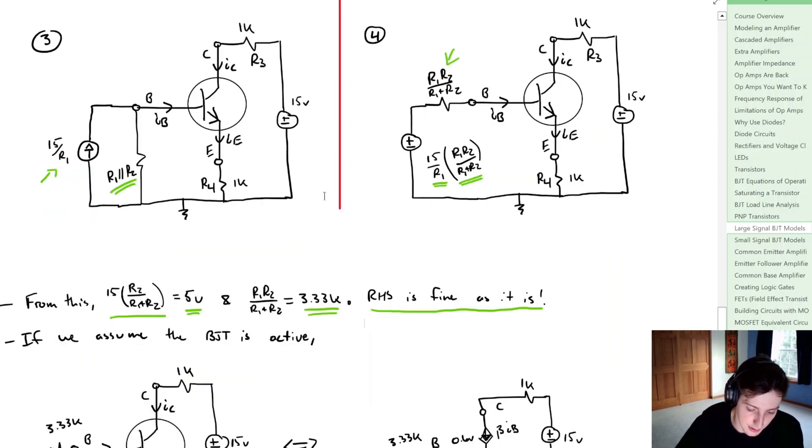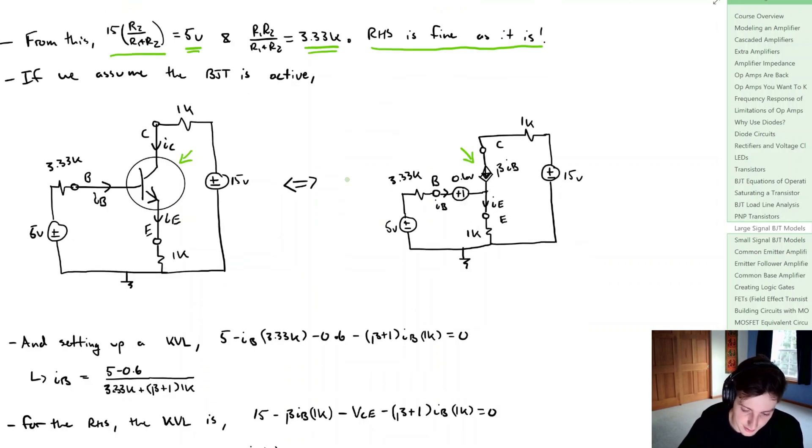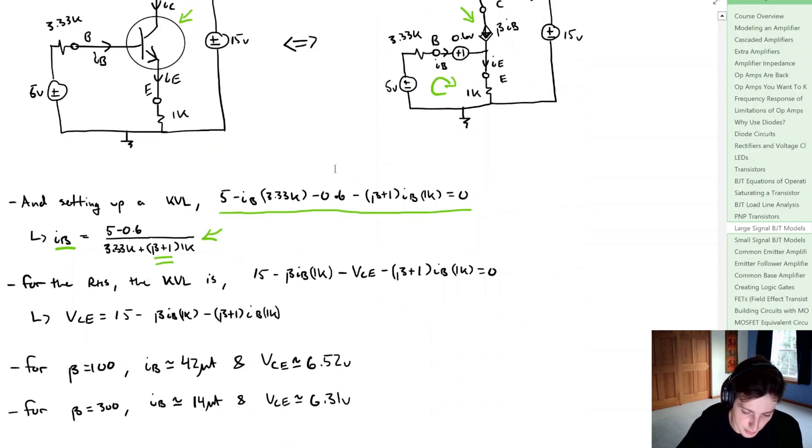Now what we can do is assume that the BJT is active. We're going to take our NPN transistor, assume that it's active, and represent it by what we initially discussed in the beginning of this video. Now what we can do inside this base loop here is just set a KVL given by this equation here, and that allows the base current to be found as this term. Notice we're not going to plug in values because there's two options for beta in this problem.